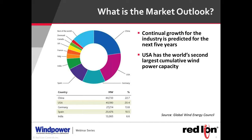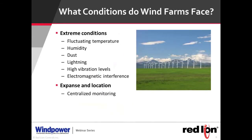Market forecasters predict continued growth for the next five years. As you can see in this slide, the U.S. still has the world's second largest cumulative wind power capacity. There's tremendous growth right now in China and India, so there's a lot to look forward to as we continue to seek alternative renewable energy.